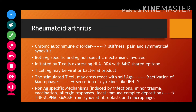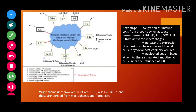Non-antigen-specific mechanisms also contribute. The meaning of non-antigen-specific is that there is no particular antigen specificity — any type of infection, minor trauma in joints, vaccination, allergic responses, or local immune complex deposition can activate these mechanisms. From this, TNF-alpha and GM-CSF are released from synovial fibroblasts present inside the synovial joints. Similarly, macrophages present in our joints also release TNF-alpha and GM-CSF — these cytokines are released through both antigen-specific and non-antigen-specific activation.